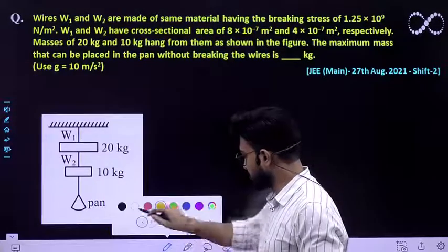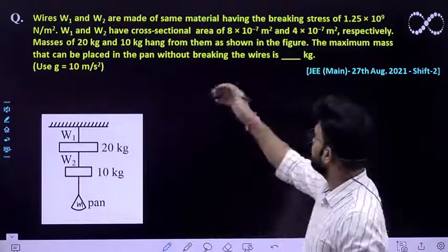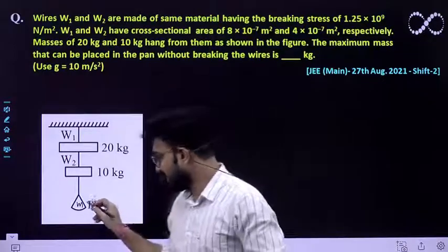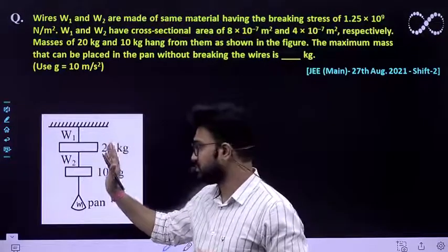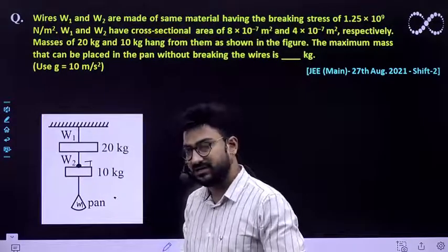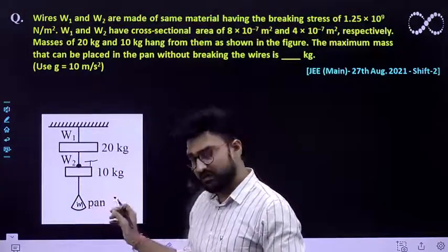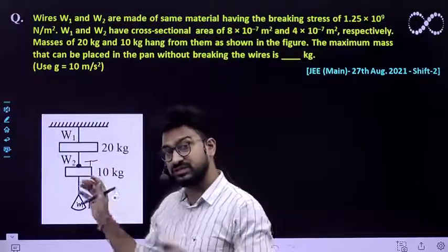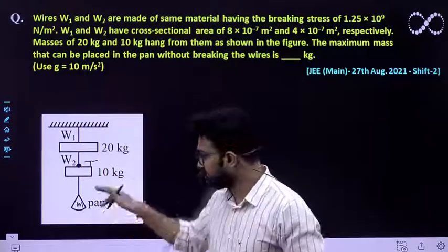So let the maximum mass that can be put on the pan be small m. You need to find the value of that small m in kg without breaking the wire. If m kg of mass has been put at this situation, it has attained its breaking strength. This is the boundary or equilibrium situation at which it is about to break.